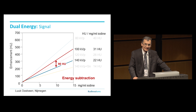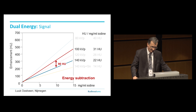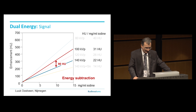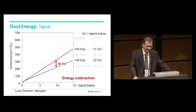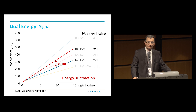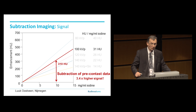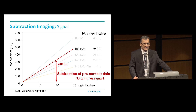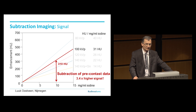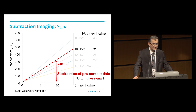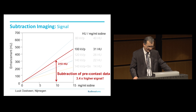If you do dual energy, you basically take the difference in this signal. So if you have, let's say, 31 Hounsfield units for 100 KVP and 22 Hounsfield units for 140, it basically gives you a difference of 9 Hounsfield units. So if you have a concentration of 10 milligram per milliliter iodine in an area, 90 Hounsfield units is roughly what you get as a signal. If you now would subtract a non-enhanced image from the 100 KVP enhanced image, the signal that you get is not 90 Hounsfield units, but 310 Hounsfield units, which basically is higher by a factor of 3.4.